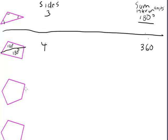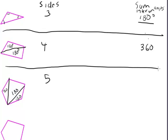Now with a pentagon — one, two, three, four, five sides — we want to find the fewest number of triangles we can make. We can draw a line here for 180 degrees, draw another line for another 180 degrees, and this triangle here is another 180 degrees. So a five-sided shape, or a pentagon, really has three triangles, or 540 degrees in it.